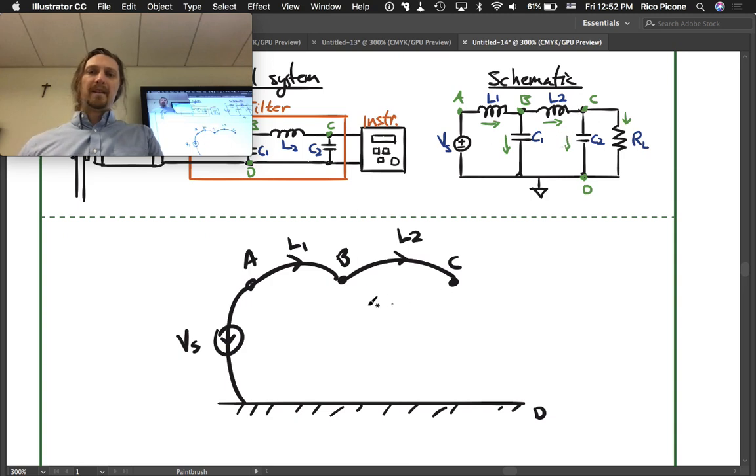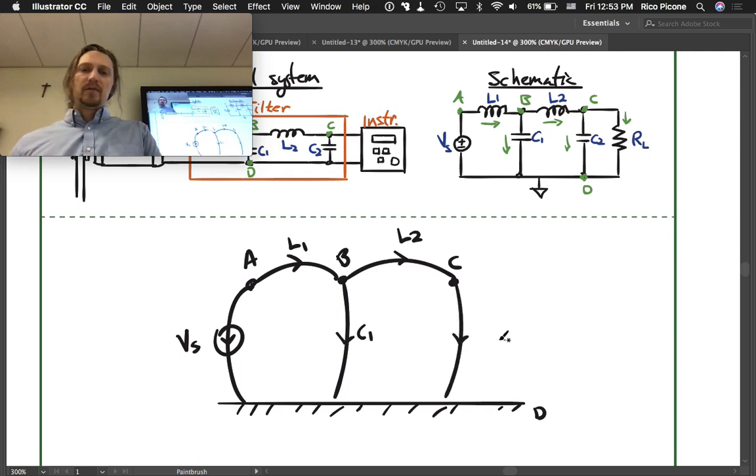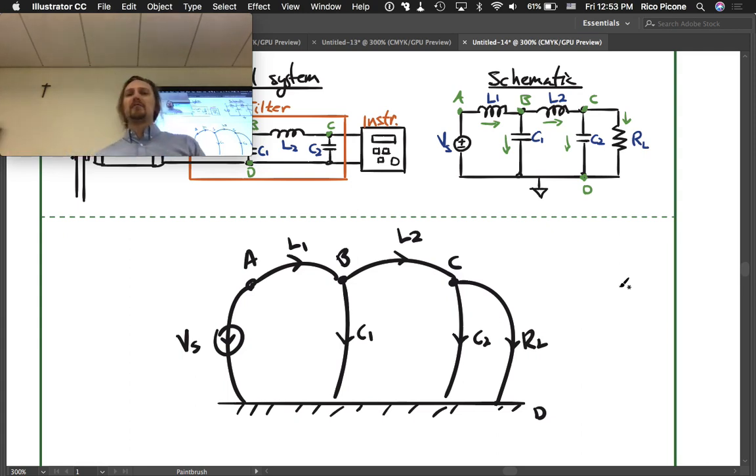These are each going to ground - the capacitors are C1, C2. And then there's a resistor, the load resistor, here to RL.